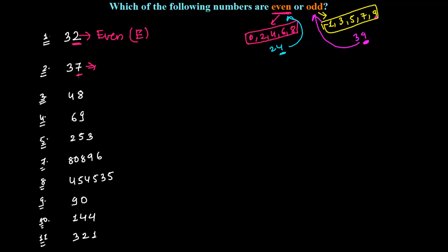Now 7, where does this 7 come? If you see, 7 is coming here in the odd group. Since 7 is the last digit, this is an odd number. So for odd, we will be writing O next time onward.